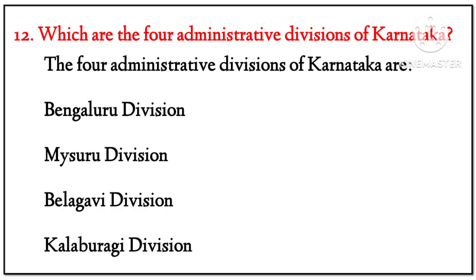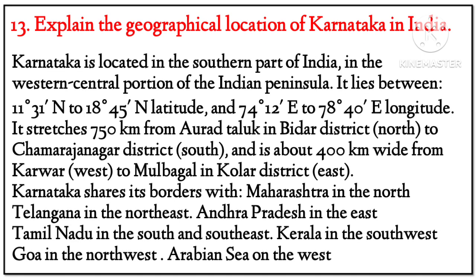Question 12: Which are the four administrative divisions of Karnataka? Answer: The four administrative divisions of Karnataka are Bangalore Division, Mysore Division, Belagavi Division, and Kalaburagi Division.